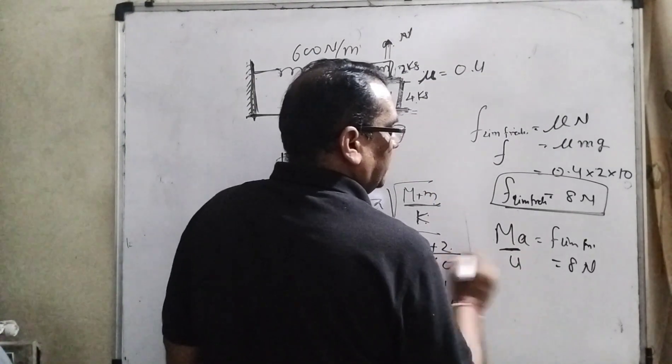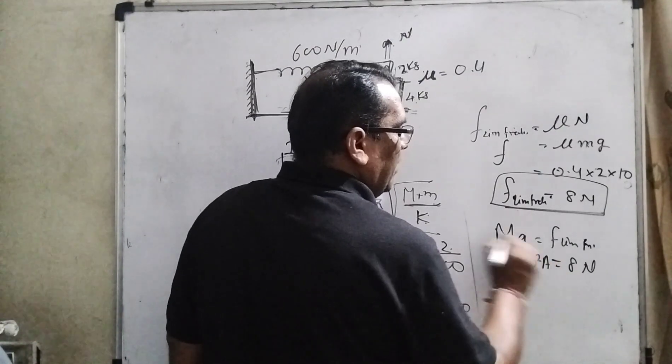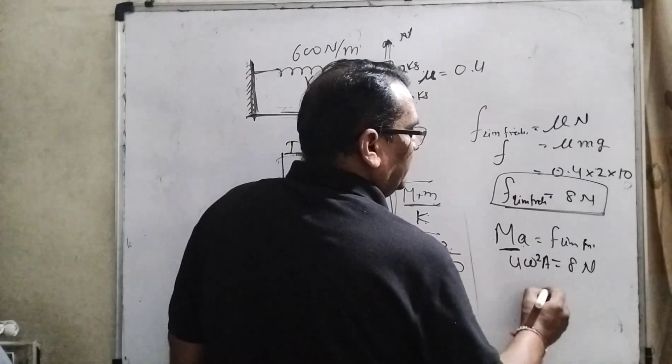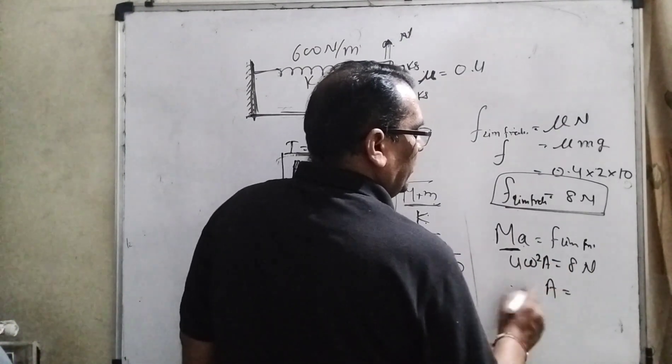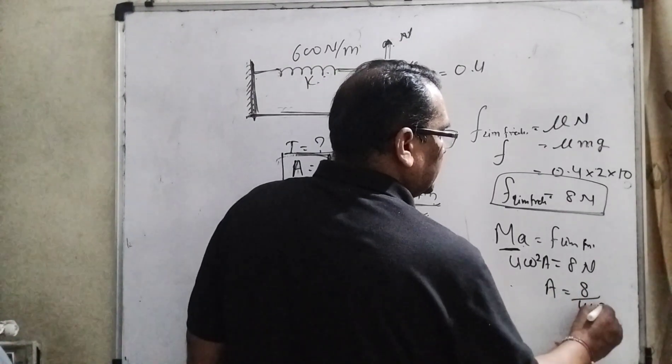The mass of the bigger block is 4 kilogram. Acceleration can be written as omega square times amplitude. So here we have to find out amplitude. Then a = 8/(4ω²).